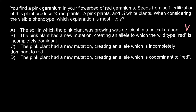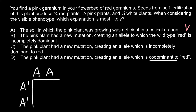Let's consider answer D, which suggests codominance. Here is an example of codominance. Imagine we have one plant whose genotype is capital A capital A, and a different plant whose genotype is capital A' capital A'. When we cross these two parents, the progeny genotype would be as follows.